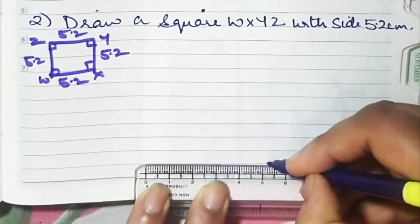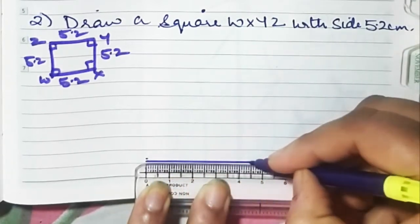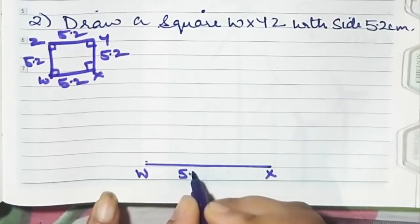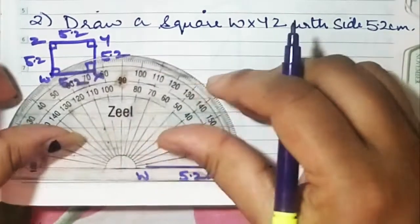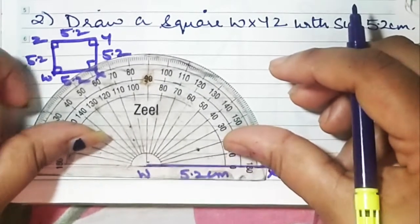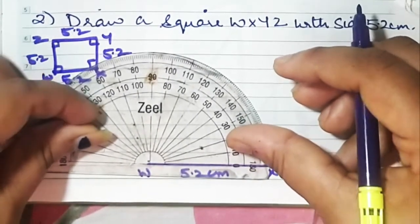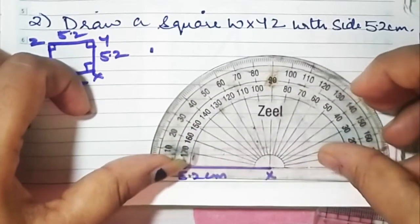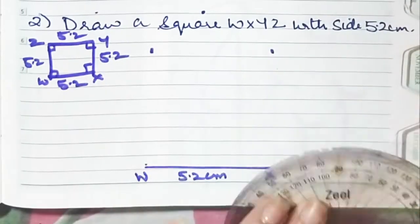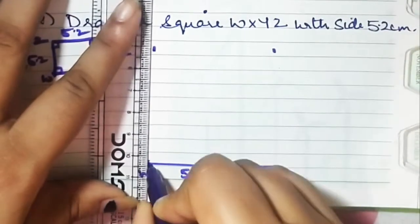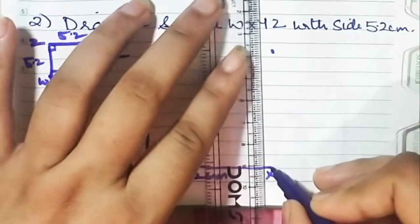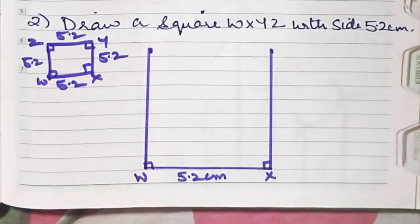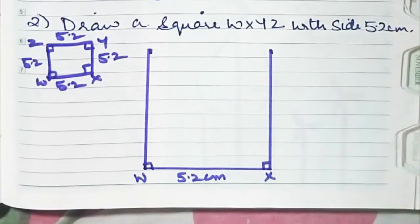5 and 2 tiny lines after 5 — that's 5.2. So W, X — 5.2 centimeters. Now mark 90 degrees on both sides. It's the same as we've done the first sum. It's a square, so all sides are congruent — there it was a rectangle where opposite sides were congruent. Either take 5.2 here or just measure this 5.2. Same measurement — 5.2.